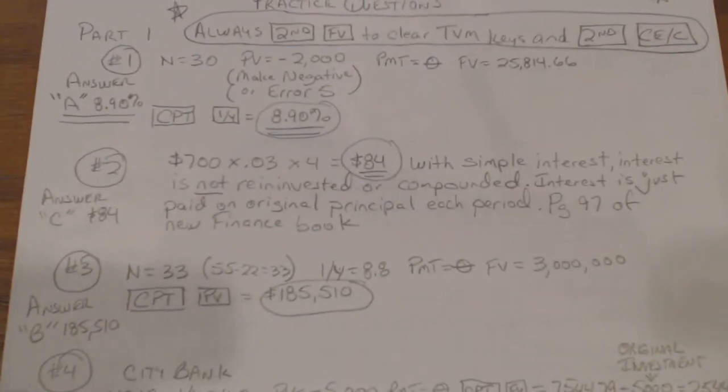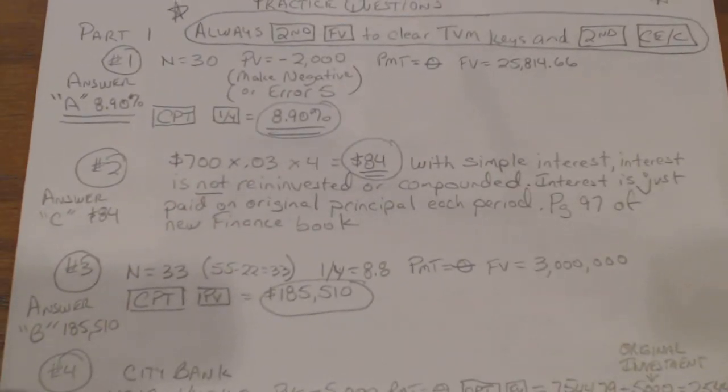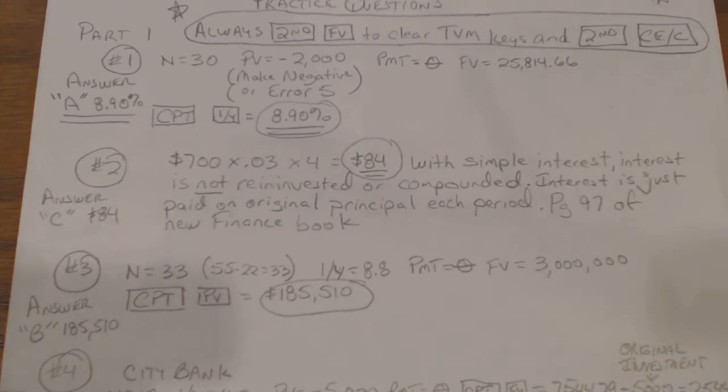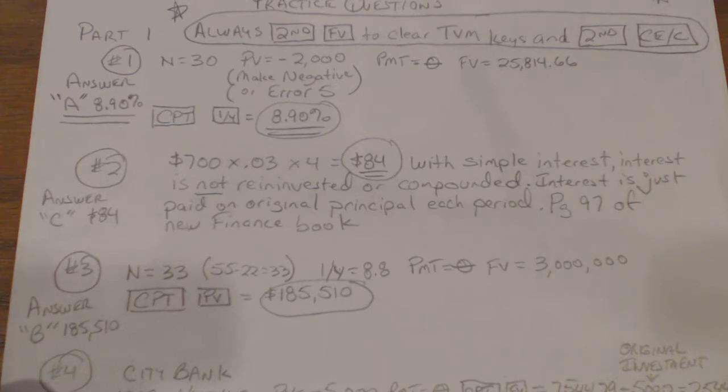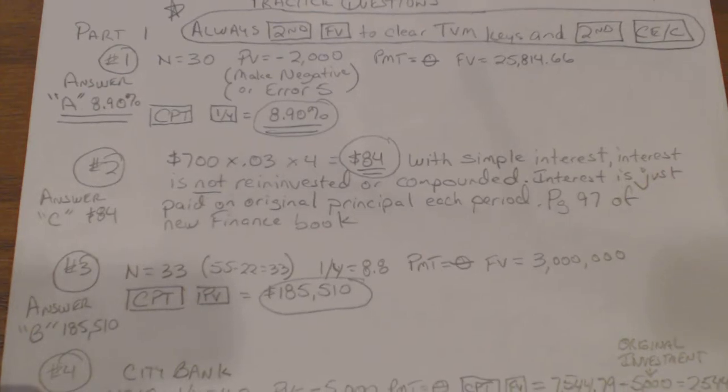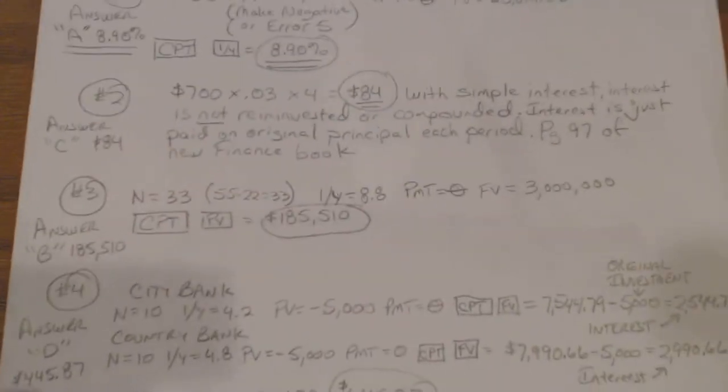Problem number three, there's nothing really complicated about that one at all. You have to figure back to figure out what the lump sum you would need, which is the present value amount. And just the number of years. It was 33 years in this case, 55 minus 22.